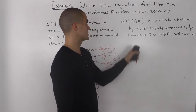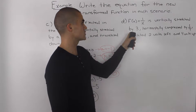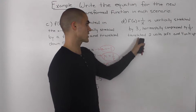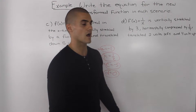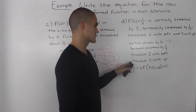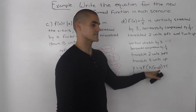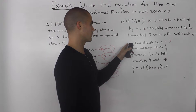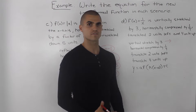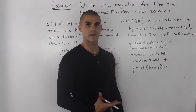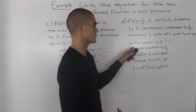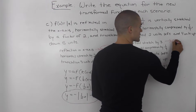Moving on to our last scenario: we have to take the parent function 1 over x, vertically stretch it by a factor of 3, horizontally compress it by a factor of 1 over 4, translate it 2 units to the left, and then 4 units up. Taking all of these transformations and writing them out in a list, let's figure out the values for a, k, d, and c. The vertical stretch by a factor of 3 affects the a value. It's not reflected in the x-axis, so the a value is going to be positive.